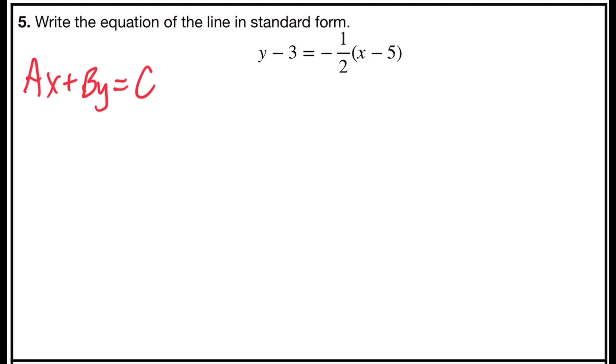I do have a fraction of negative one-half in this problem that's in point slope form. So first I'm going to clear the fractions by multiplying both sides by the least common denominator, which is 2.